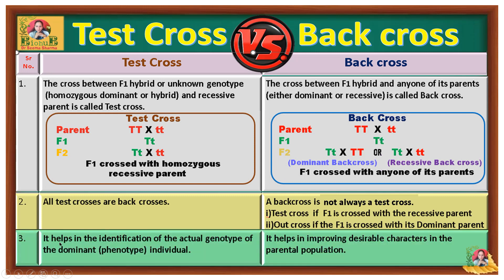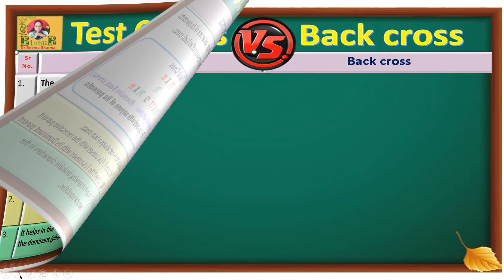Point number three: the purpose. Test cross helps in the identification of the actual genotype of the dominant individual. This means if one individual is tall, then the test cross helps to figure out whether it is genetically pure tall or genetically a hybrid tall. On the other hand, back cross helps in improving desirable characters in the parental population.